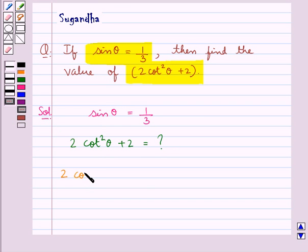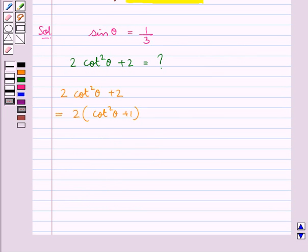Now 2 cot²θ plus 2 is equal to 2 into cot²θ plus 1 the whole. Now this is equal to 2 cosec²θ since we know that 1 plus cot²θ is equal to cosec²θ.